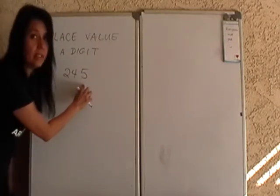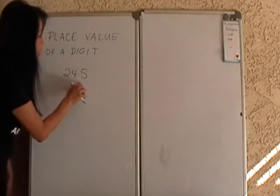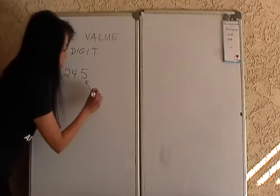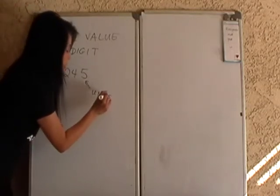So the digits are 2, 4, and 5. We say that 5 occupies what place value? We call this the units. This is the units digit, or sometimes you say it's the ones digit.